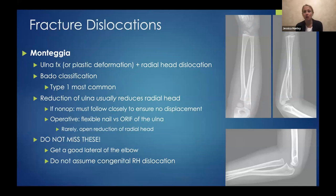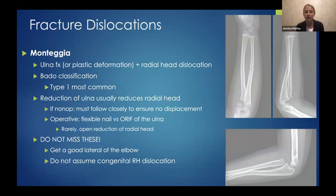I'm pretty aggressive with treating Monteggia fractures because I hate to miss them. Good radiographs are very important — on a lateral view it's pretty obvious that the radial head is not located. I've seen people diagnose a congenital radial head dislocation, especially when the ulna is plastically deformed rather than overtly broken. When you look at the lateral, it's clear that the radial head is not located.